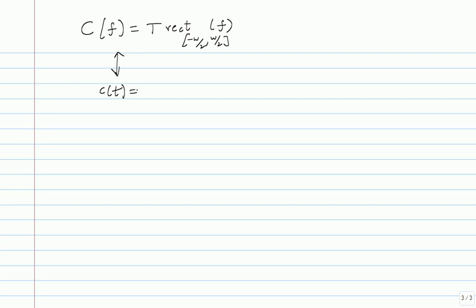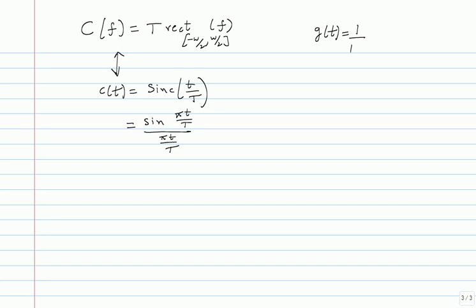C of F in the case when 1/T equals W becomes T times rect from minus W by 2 to W by 2. The Fourier transform gives C of T equal to sinc(T/T). G of F is slightly different — instead of T you have root T — so G of T works out to be (1/root T) times sinc(T/T), where T equals 1/W.